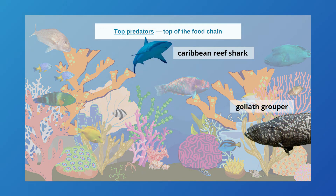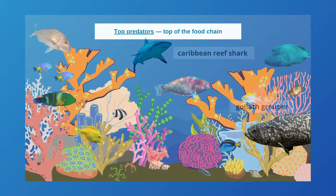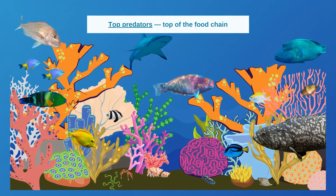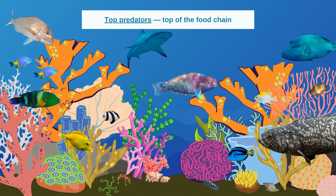And finally, top-level predators are animals that prey on the carnivorous fish and are attracted to all the life that is in a coral reef. The top predators also contribute in keeping balance in the coral reef food chain.